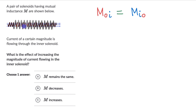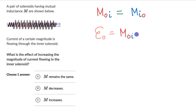When there is a current flowing in the inner solenoid, there will be magnetic field lines produced and some magnetic flux. As a result of magnetic flux passing through the coils of the outer solenoid, there will be an EMF that opposes the change in flux — Lenz's law. So the EMF in the outer solenoid equals the mutual inductance of the outer with respect to the inner, multiplied by the rate of change of current in the inner solenoid.